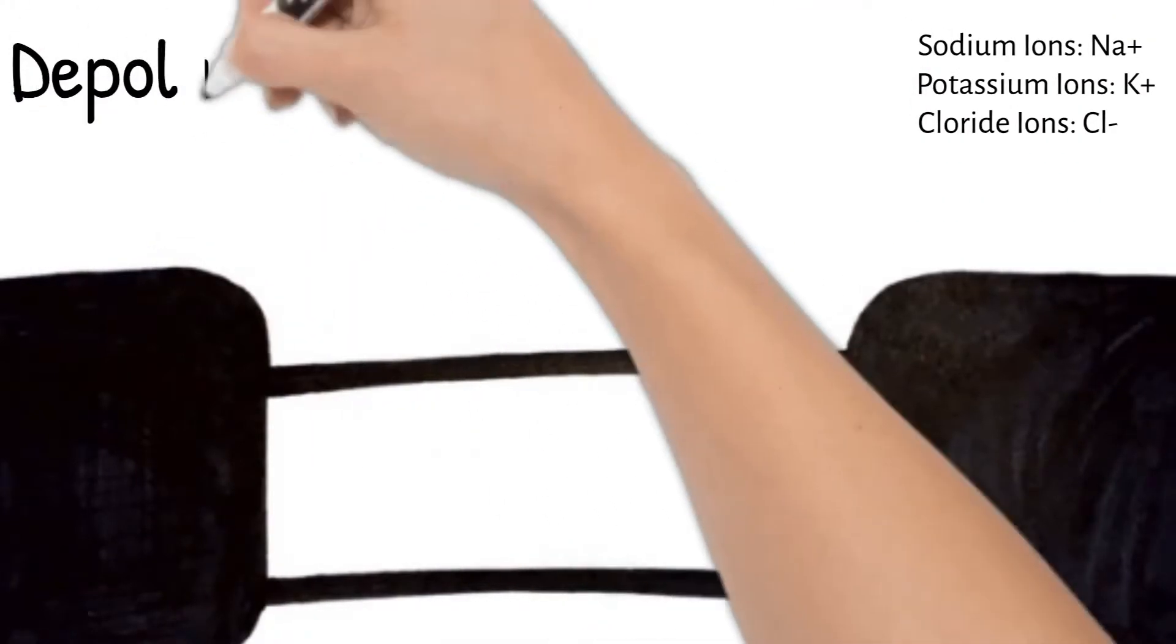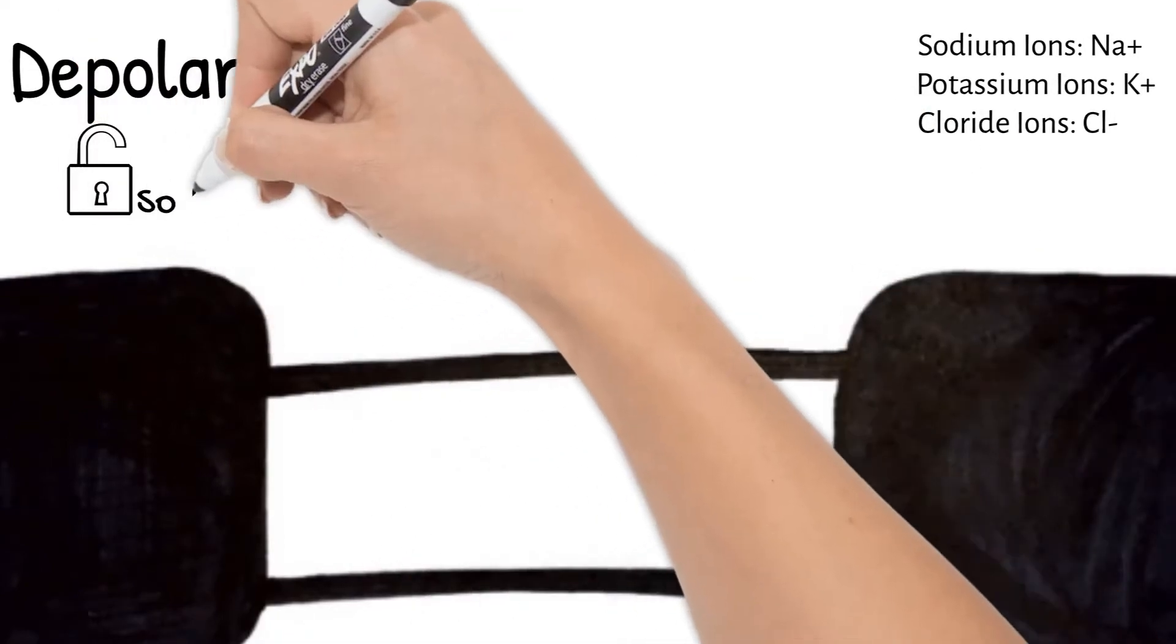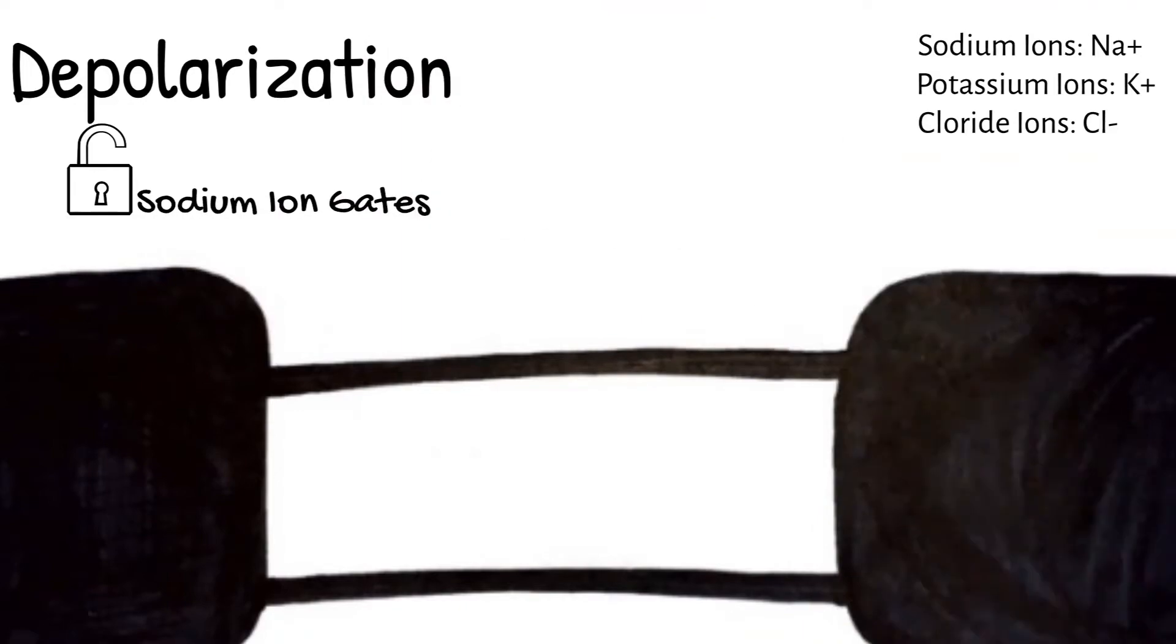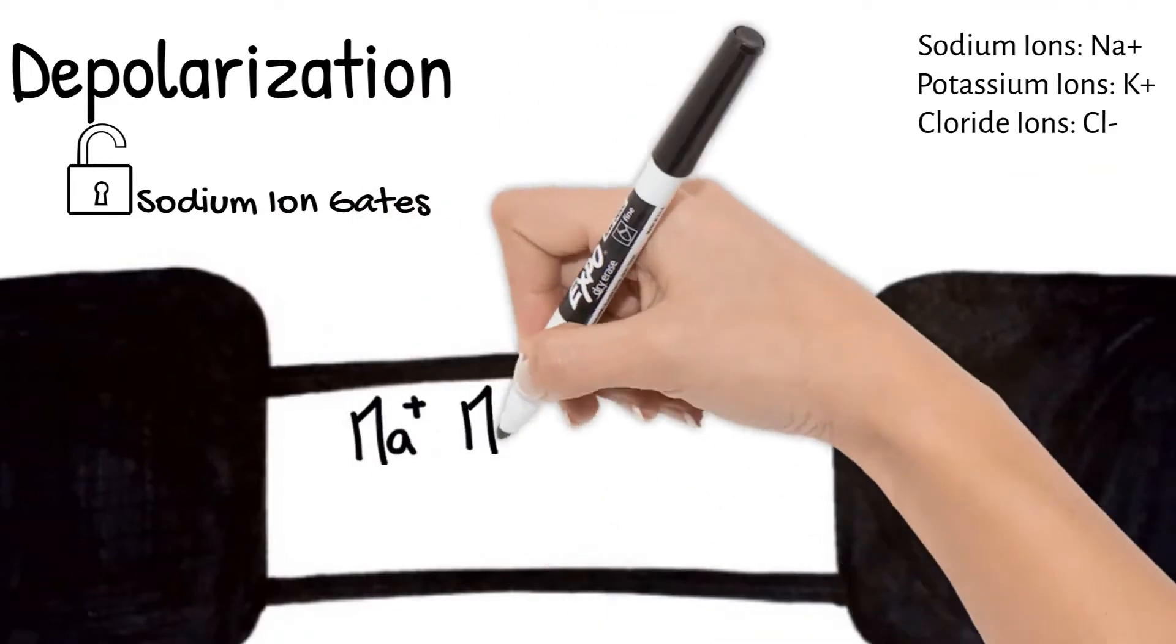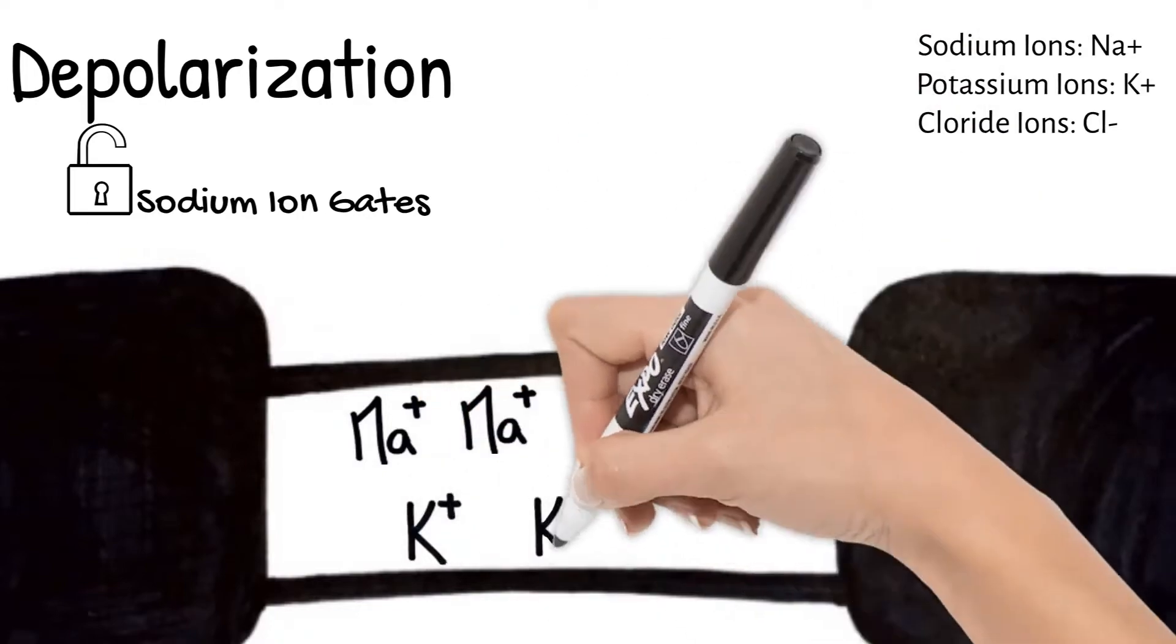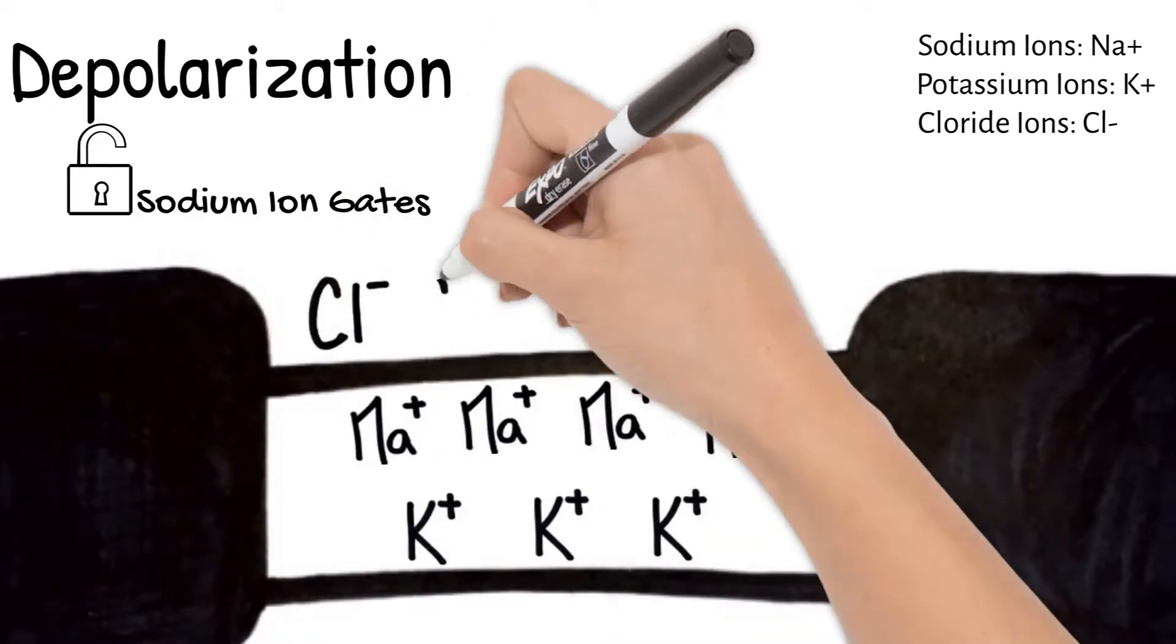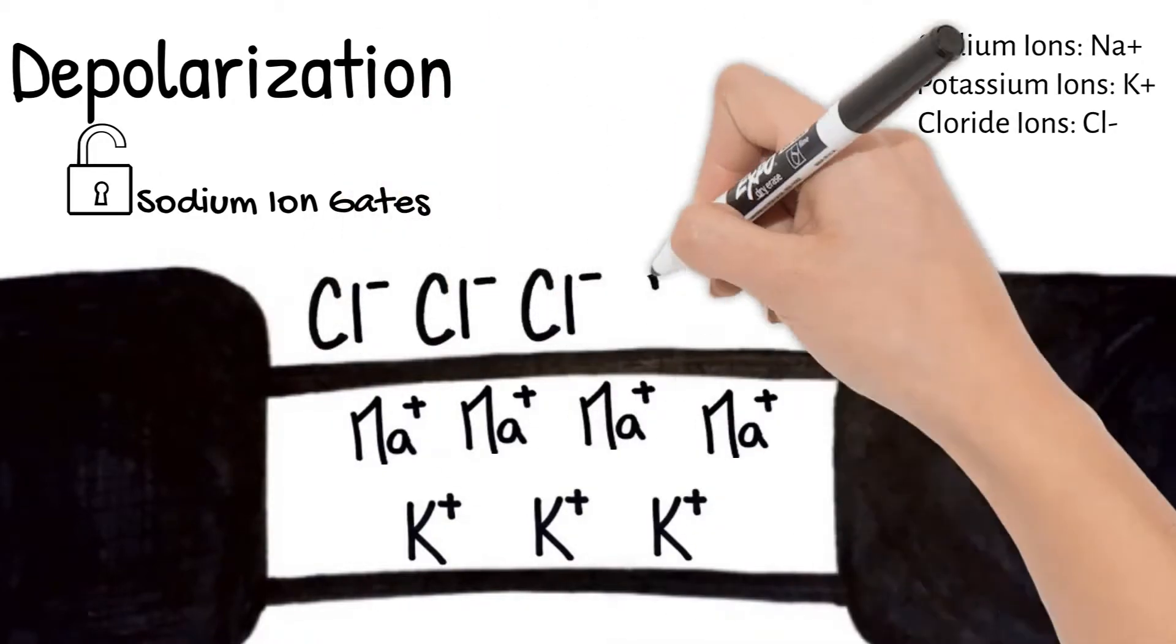Depolarization happens when the sodium gates open and sodium comes into the neuron. Now there's lots of sodium inside, as well as the potassium that was already there. For our purposes, think of the chloride ions as opportunistic. If a gate is open, they'll join in going through it. So there are now chloride ions outside the neuron.